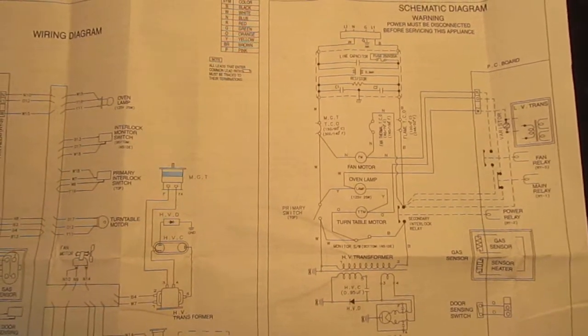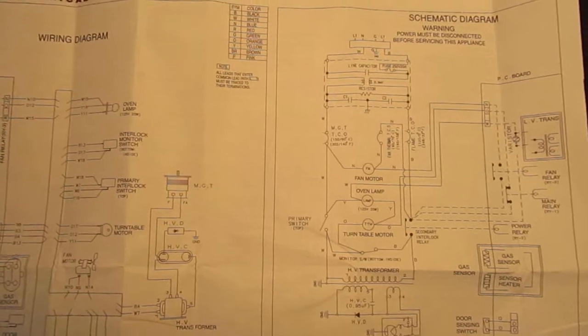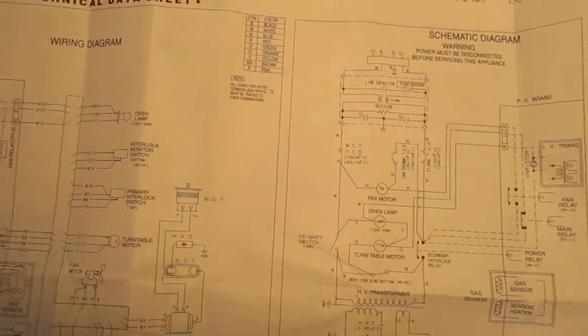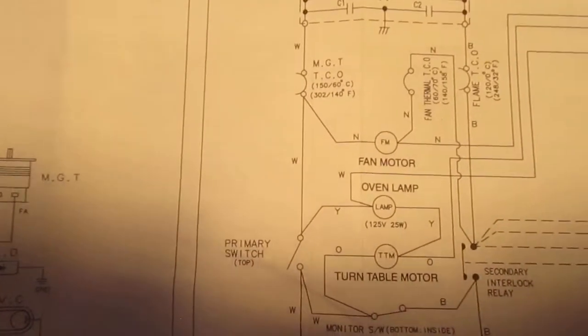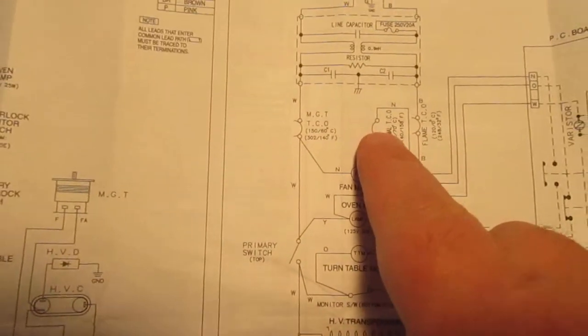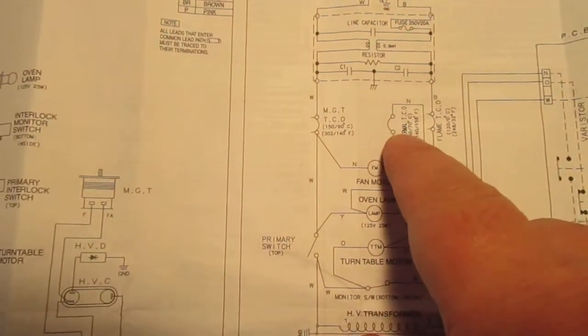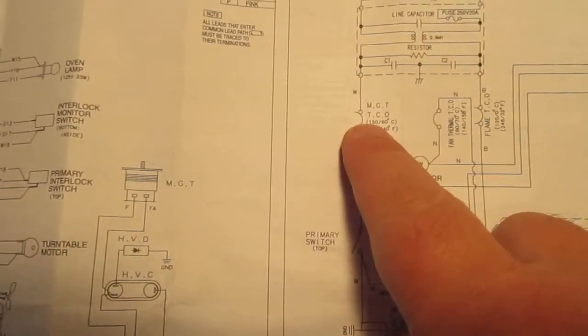Now you need to know that some of your thermal cutoffs are normally open, yes, normally open. The symbol for normally open is this symbol here. There should be two little breaks there, but anyway, the symbol for normally closed is this symbol here.